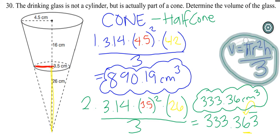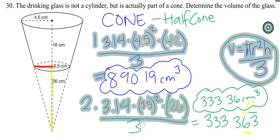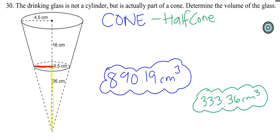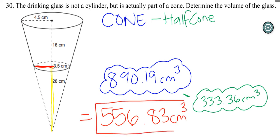Go ahead and pause this, make sure you have it copied down. I'm going to erase some of the extra stuff so we have some more space. So now what we need to do is take these two answers, and we need to subtract them. So we're going to do 890.19, and we're going to subtract 333.36. And then our final answer is 556.83 cubic centimeters. And that's our final answer.